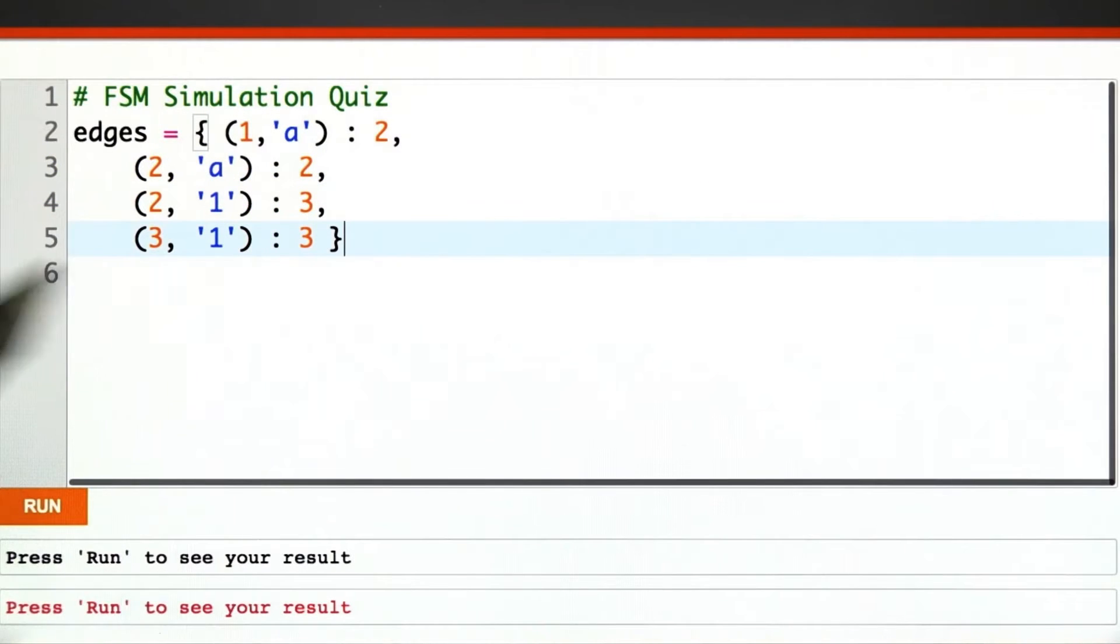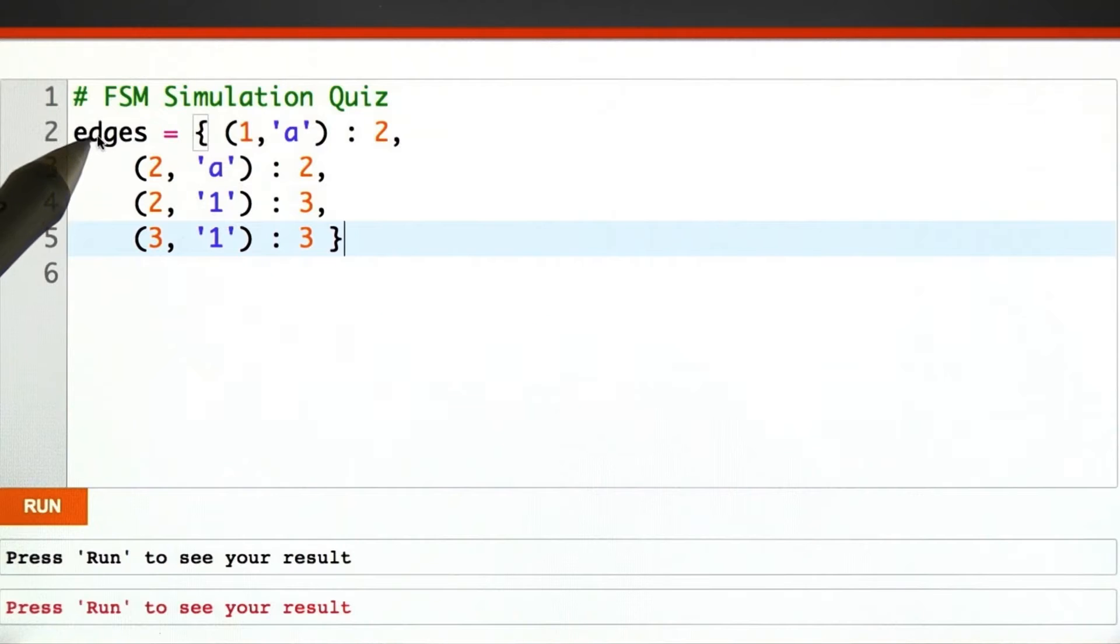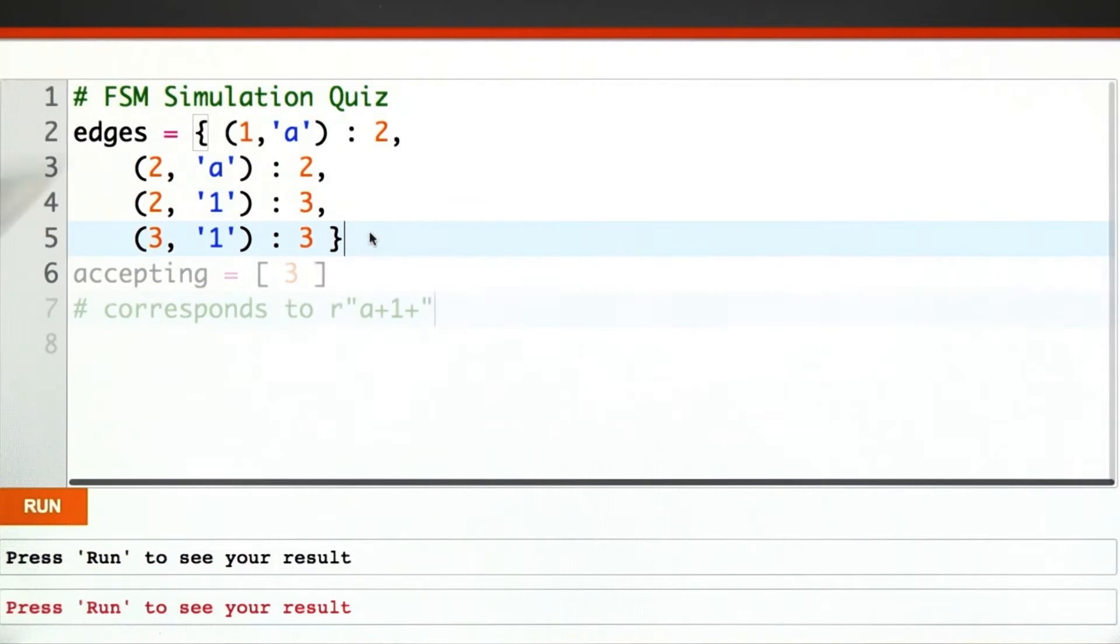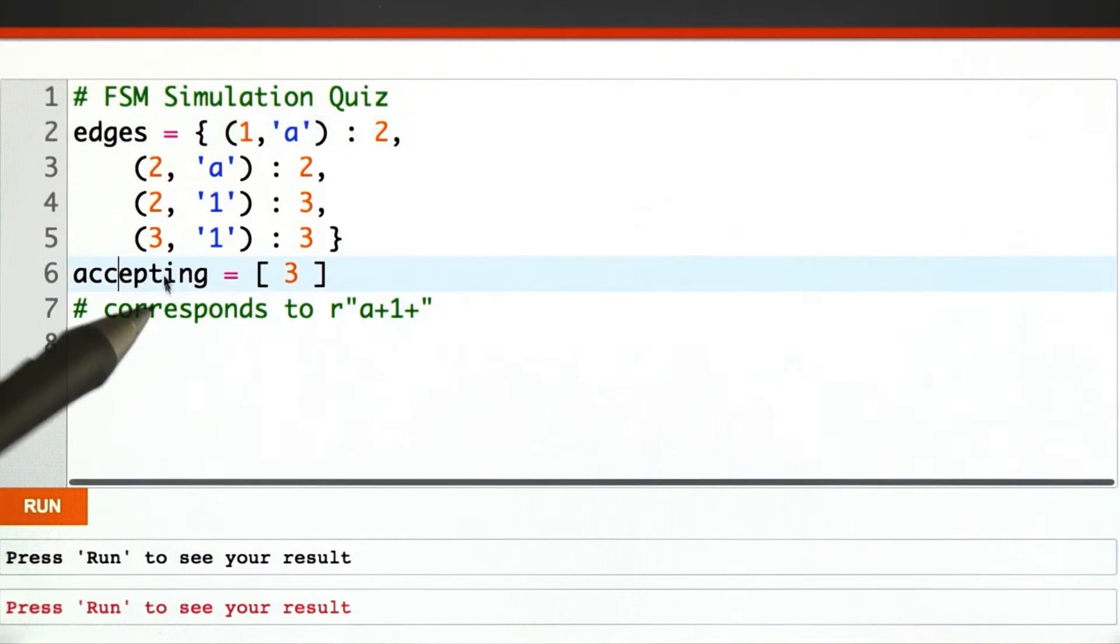So let's get started on our finite state machine simulation quiz. Here I'm just recopying the edges definition so that we'll have a test input to work with. And these two, the edges and the accepting state, correspond to the regular expression a plus 1 plus.